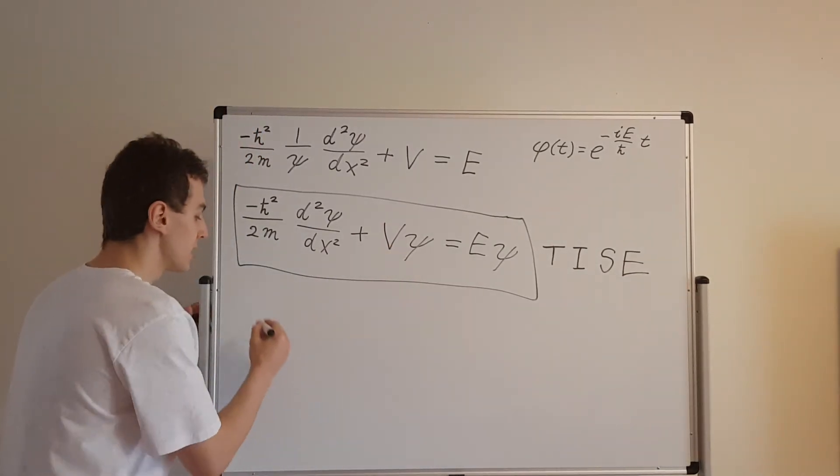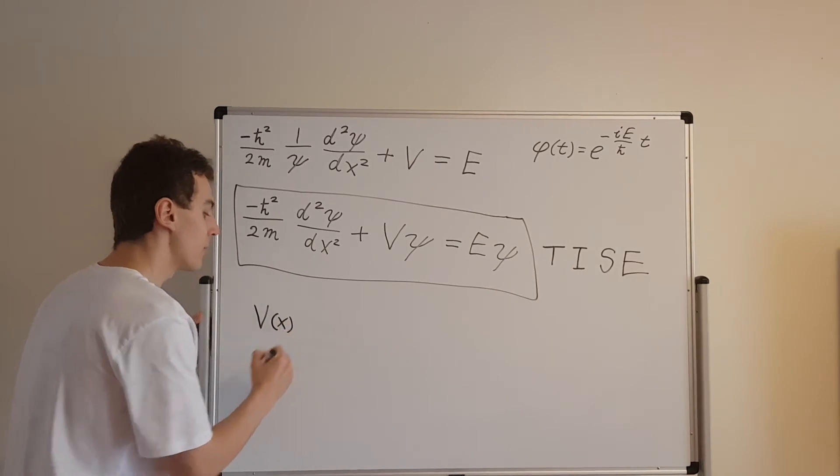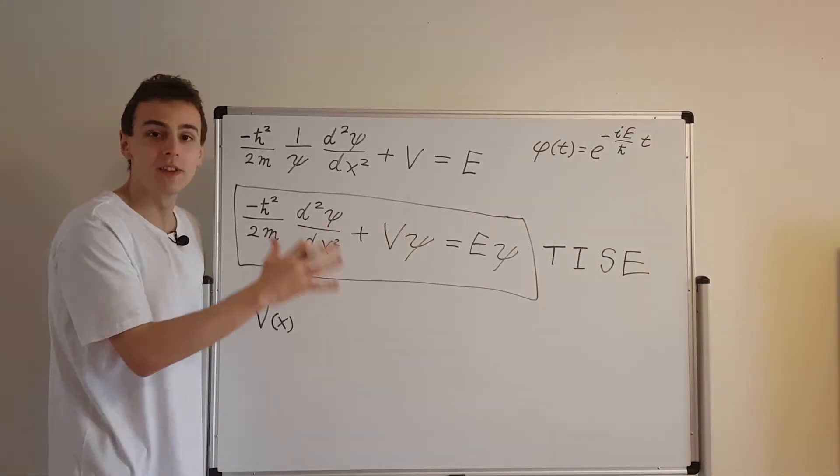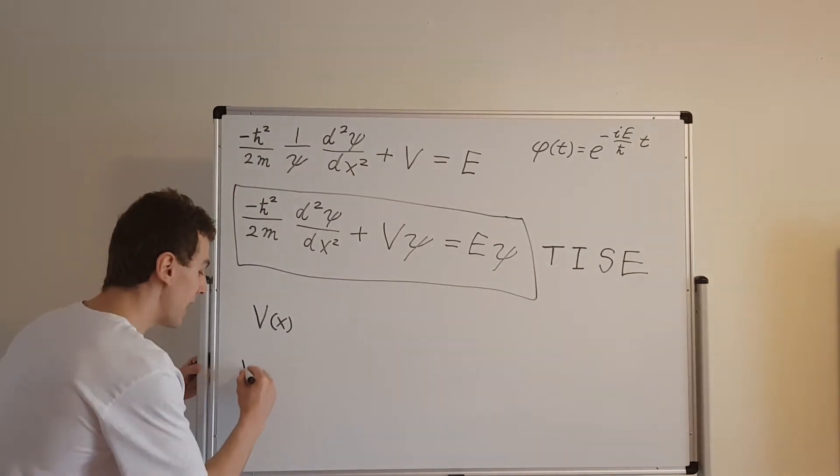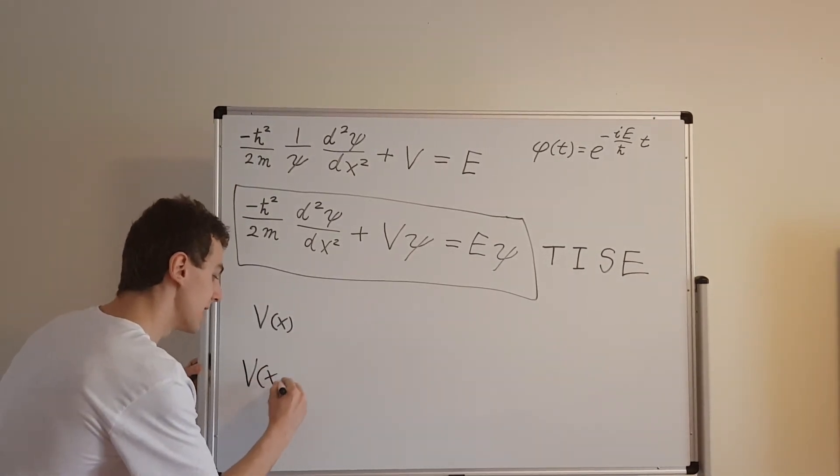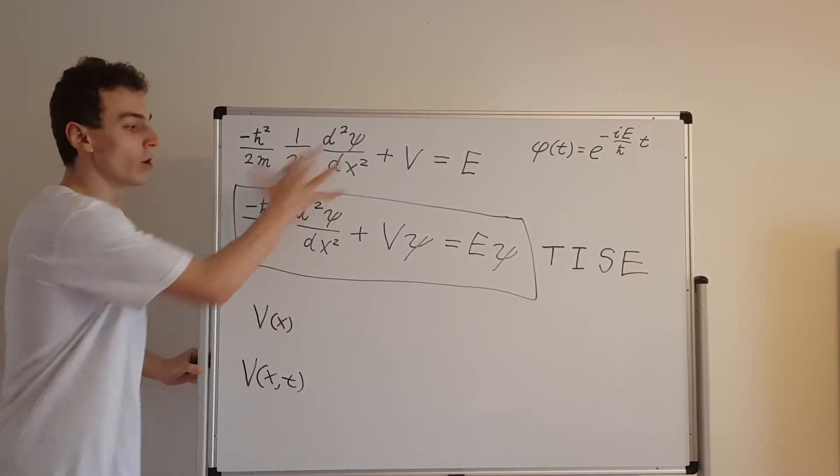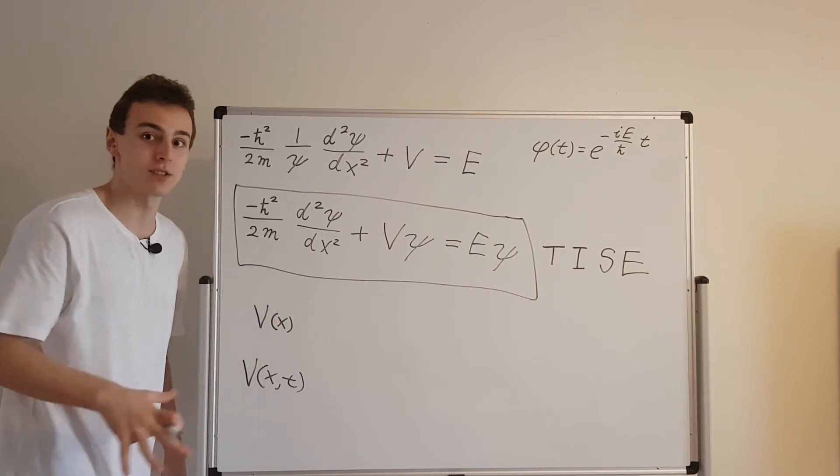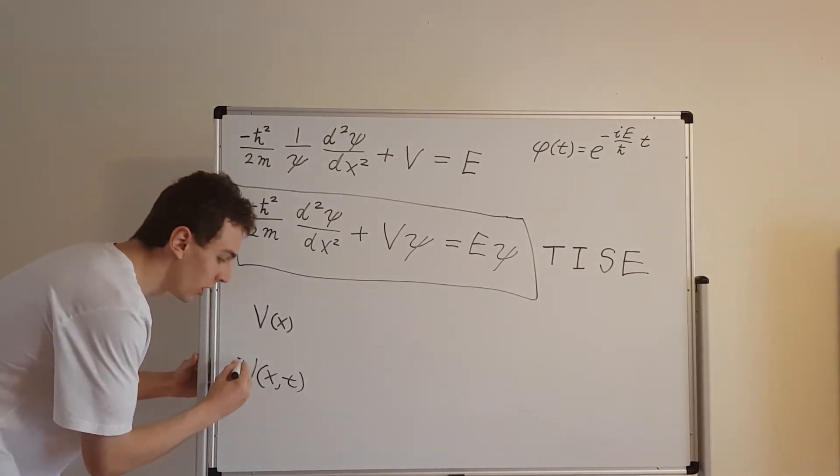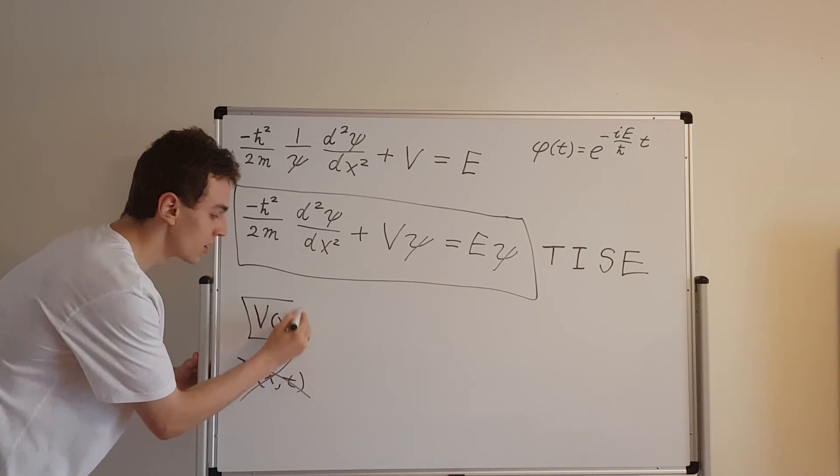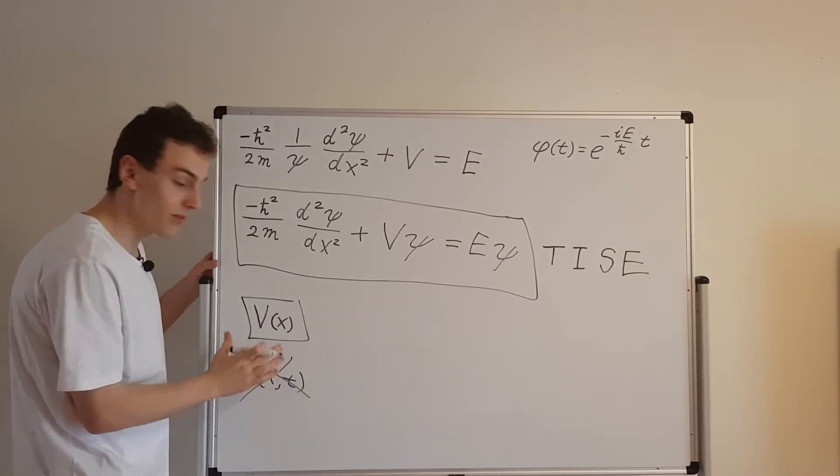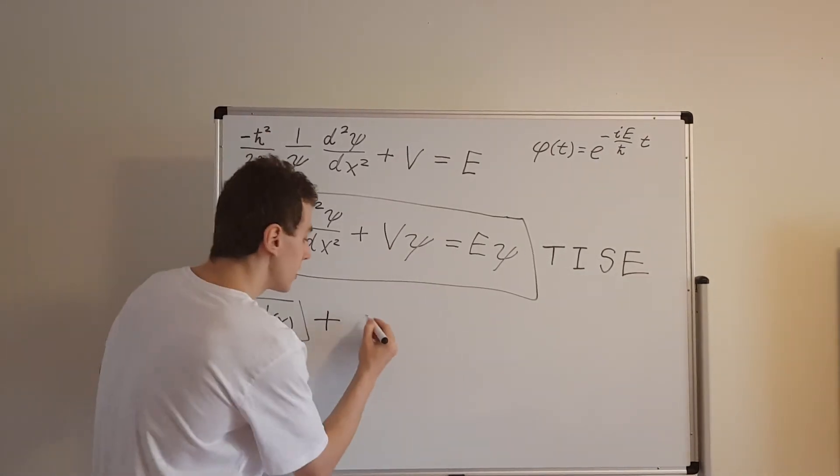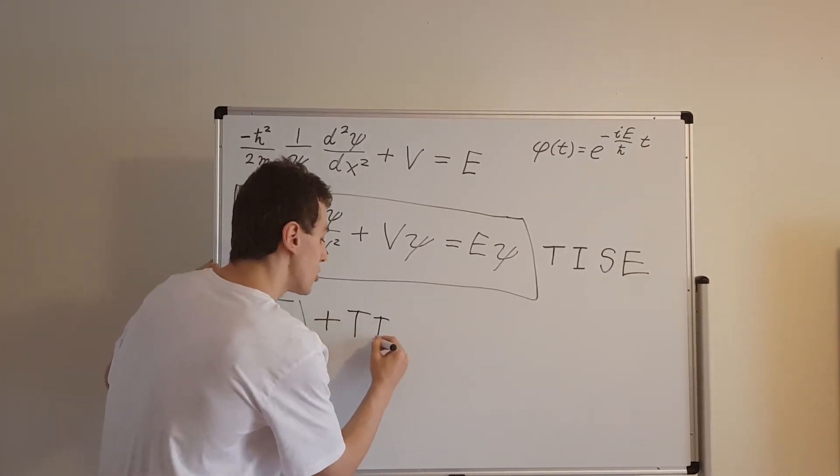But we can't actually go any further with this until we specify V of x. So we need to know what V of x is. Remember, V only depends on x. Otherwise, we wouldn't be able to do all this separation of variables stuff. If instead we had V of x and t, then all of this would go into chaos, and we wouldn't be able to use the techniques that we used in the past few videos. So what we need is to specify the potential, we need that potential energy function V of x.